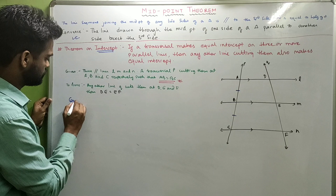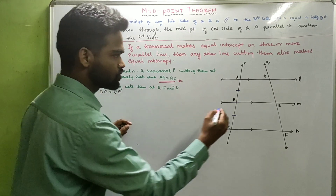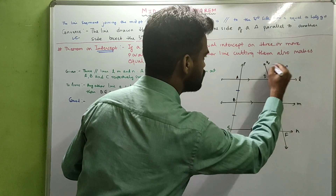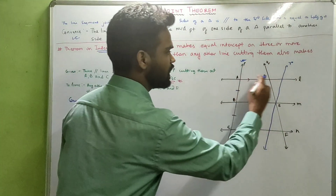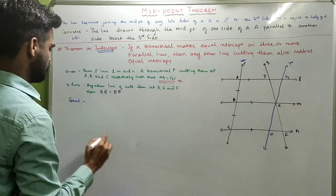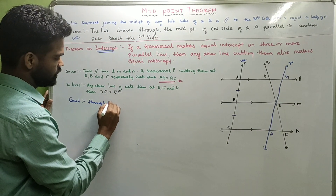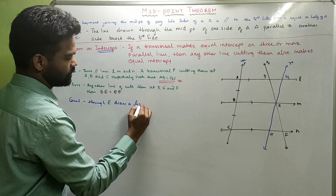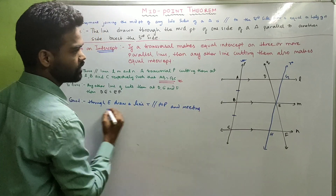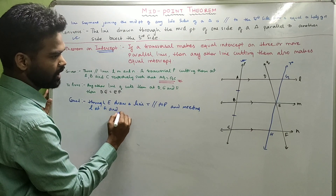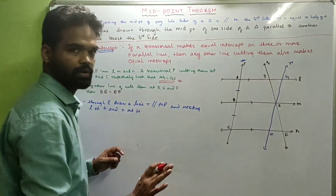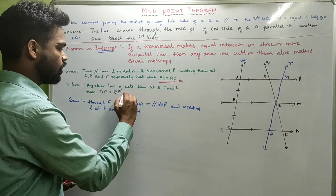We need to prove that DE equals EF. I will do some construction. Through E, I will draw a line R parallel to P, meeting L at G and N at H.